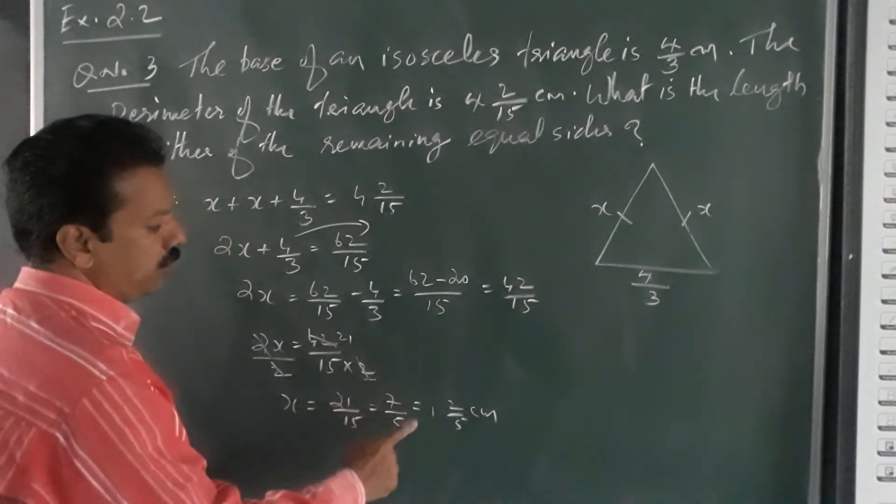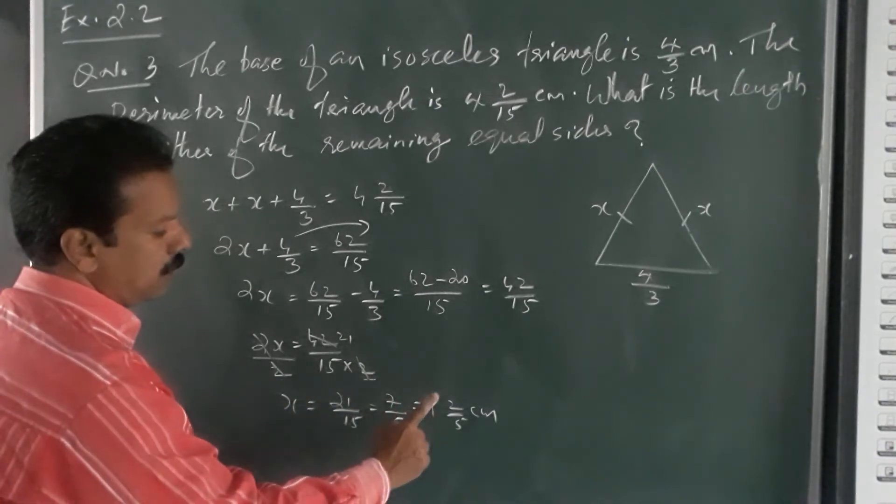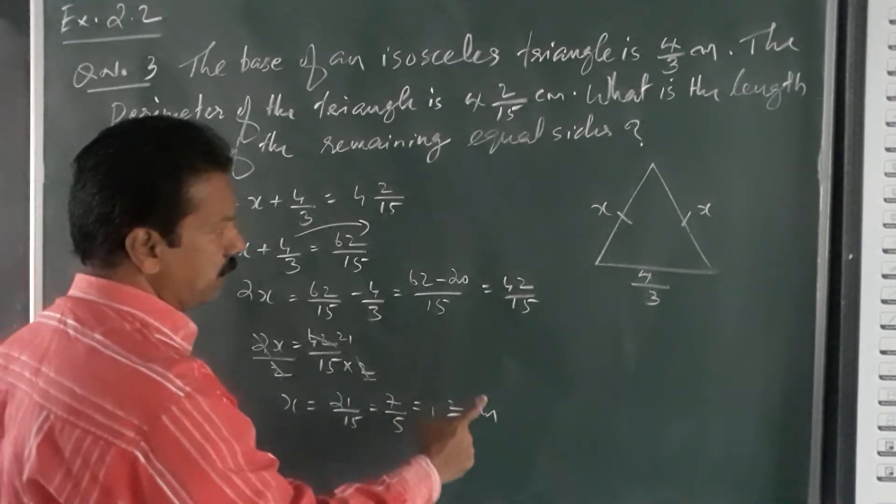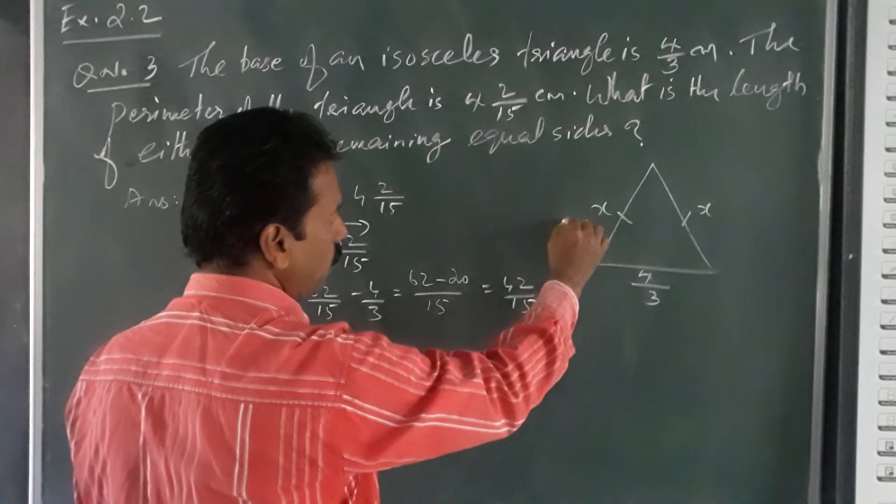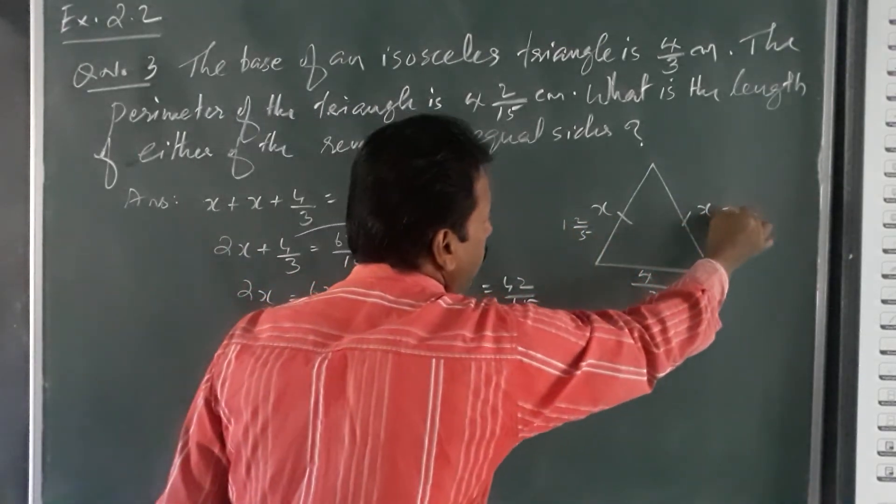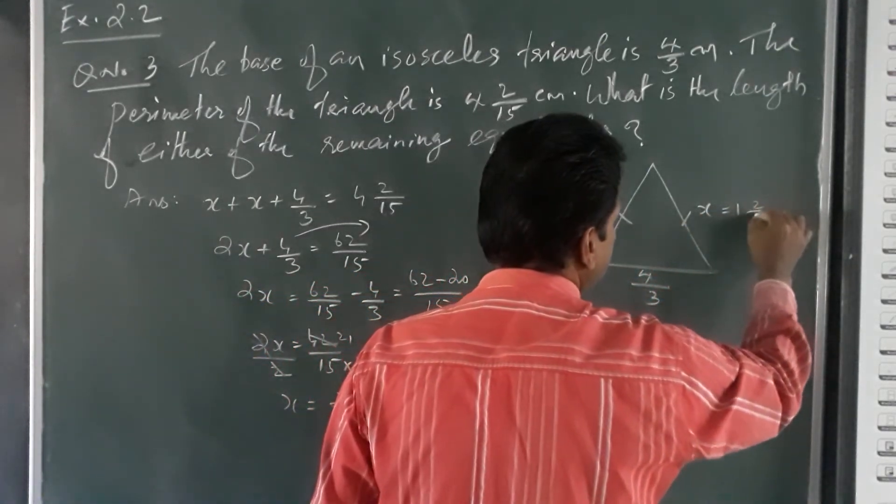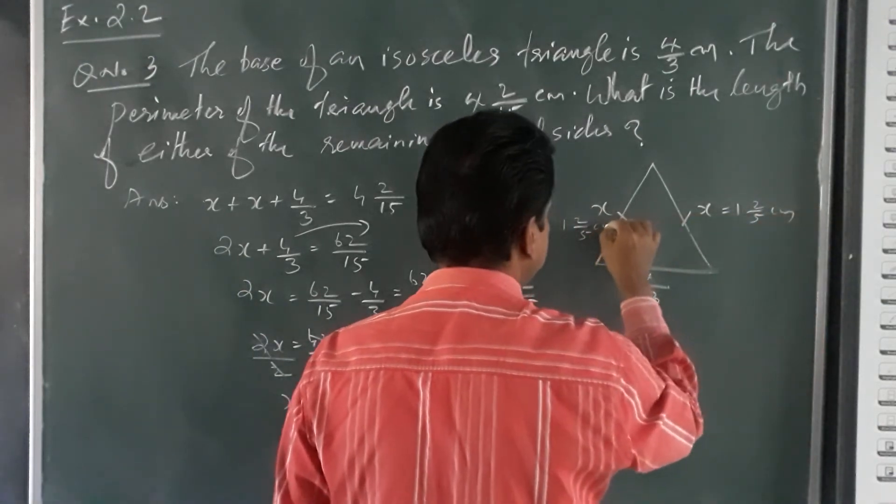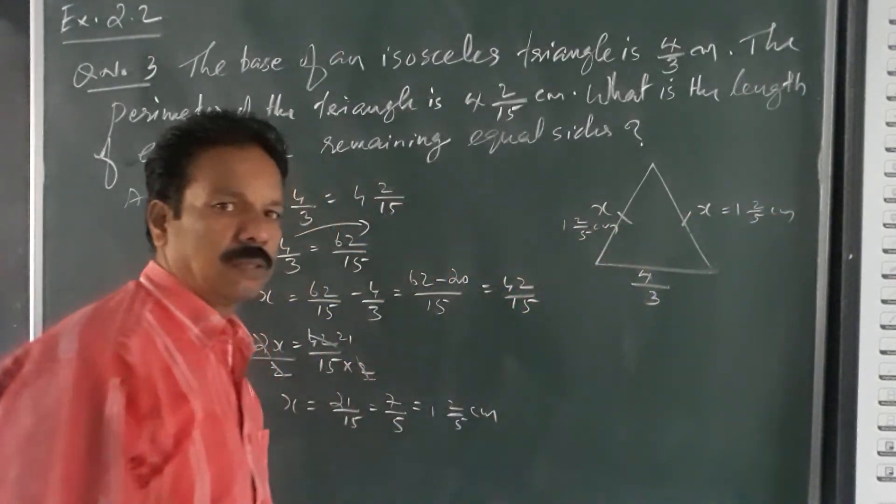Change the improper fraction into mixed number: 1 and 2 by 5 centimeter each side, which is the length of equal sides. Okay.